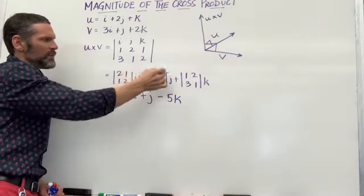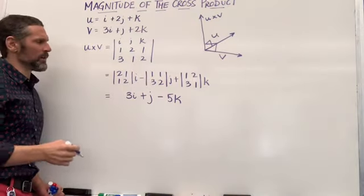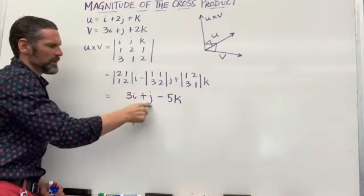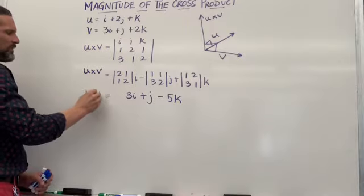When you take the individual two by two matrices and you find out what their determinants are, the down products minus the up products, you ultimately get 3i plus j minus 5k. And that is vector u cross v.